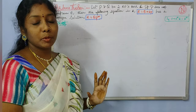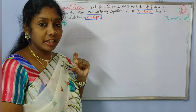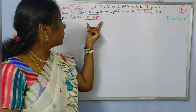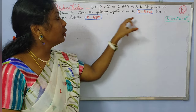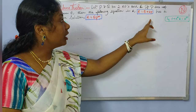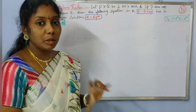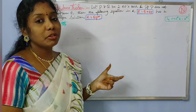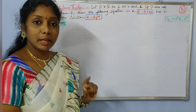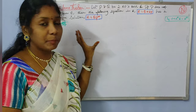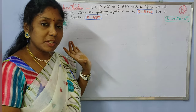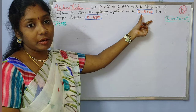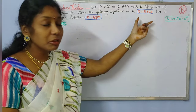Arden's theorem proof has two parts. The first part deals with proving that R equal to QP star is a solution to the equation R equal to Q plus RP. The second part aims to prove that this is the unique solution. Let us come to the proof of the first part — to prove that R equal to QP star is a solution for this equation.